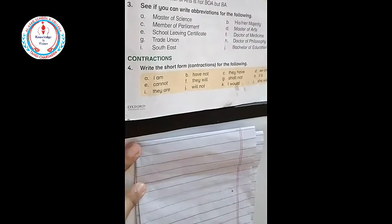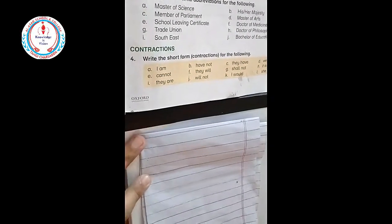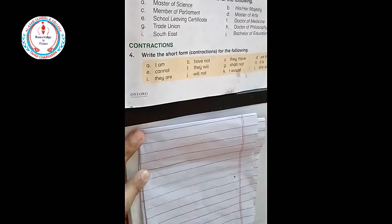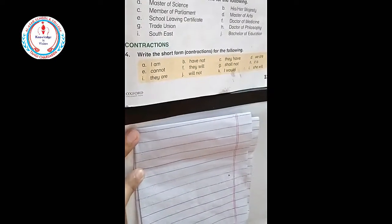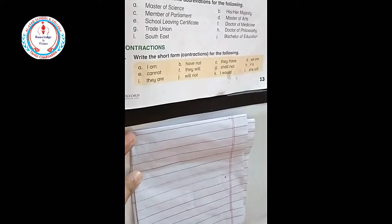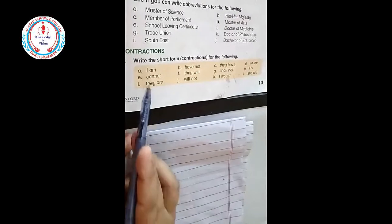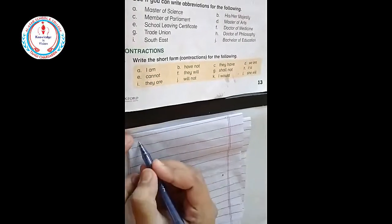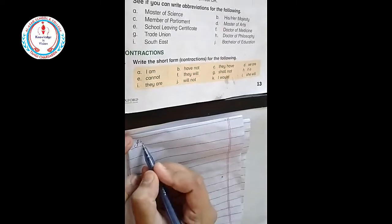So next question: contractions. Write the short form contractions for the following. Now these words that we have first, we will write their short form. So first is I am. I am we will write in short form like this: I'm.